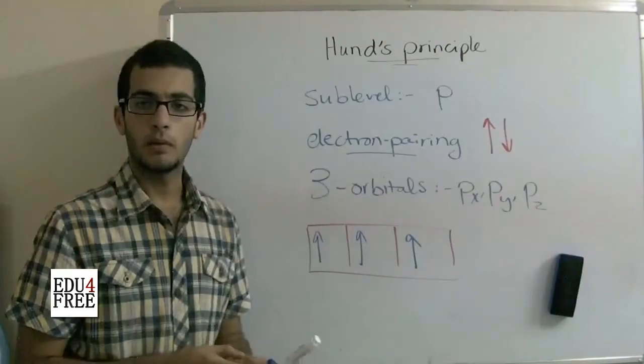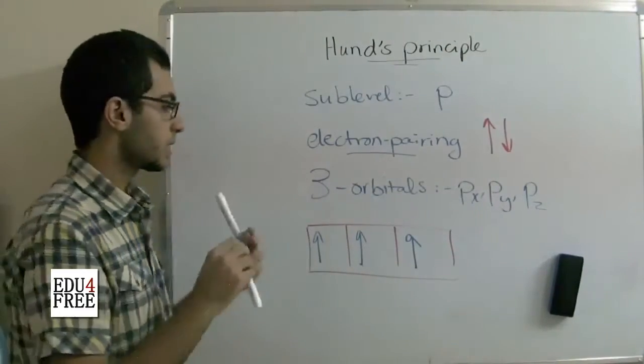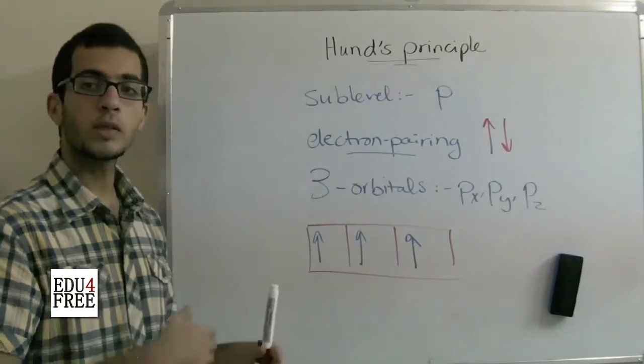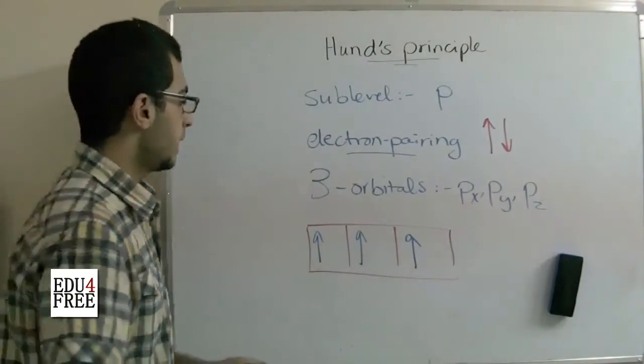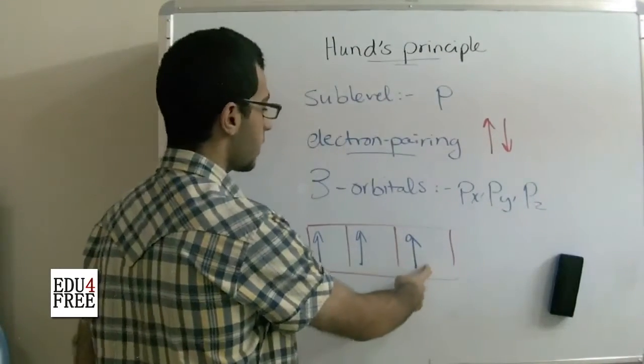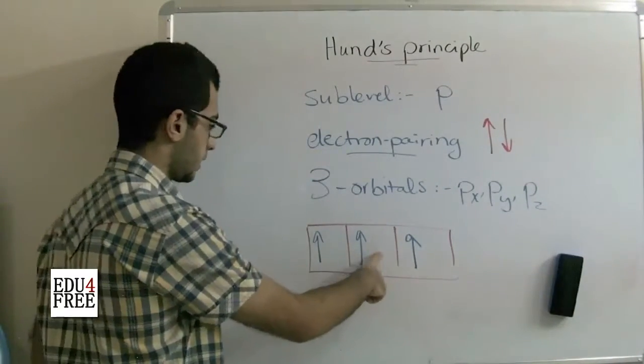They will repel because they have the same sign. Both of them are negative, so there will be repulsion. So it's preferable for the electron, if there is an empty orbital, that it goes to this orbital rather than pairing with another electron.